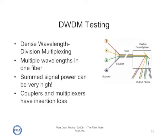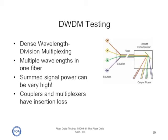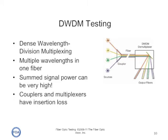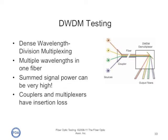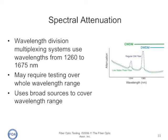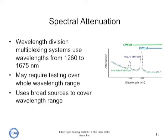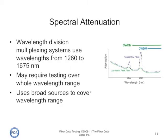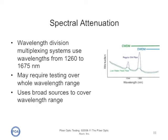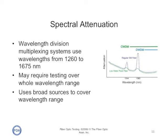Wavelength division multiplexing uses multiple wavelengths of light to transmit signals simultaneously. We need to ensure that the fiber has low attenuation and, in fact, similar attenuation at most of the wavelengths used for transmission. For that reason, we test spectral attenuation of the fiber. WDM systems can use the entire spectrum from 1260 to 1675 nanometers, which includes the area where you normally have the water peaks. So particularly when you use CWDM, you need low water peak fiber, and spectral attenuation tests will confirm that the fiber will support DWDM or CWDM over the wavelength range of interest.